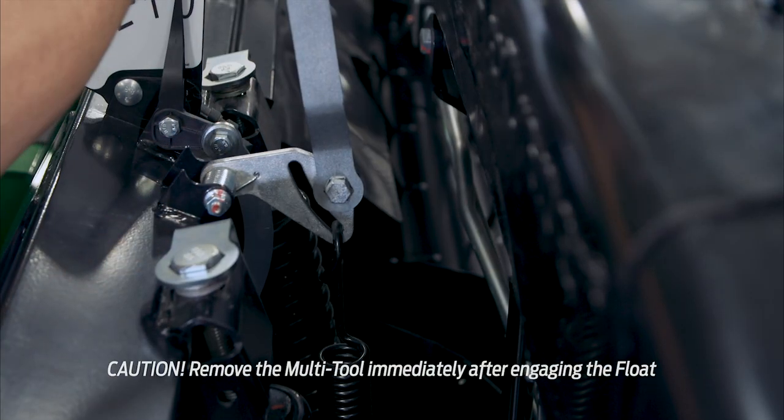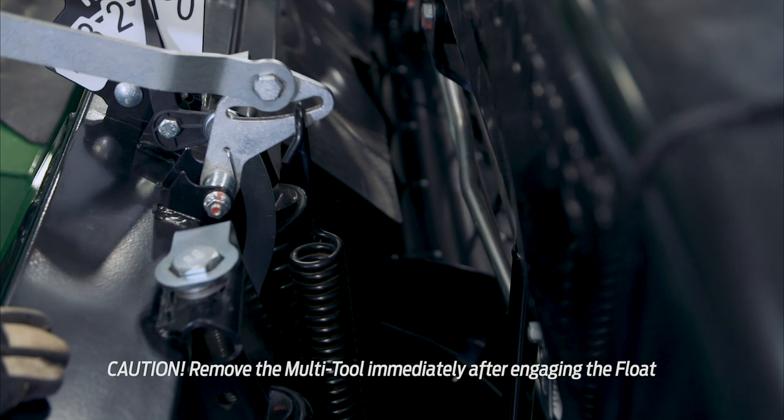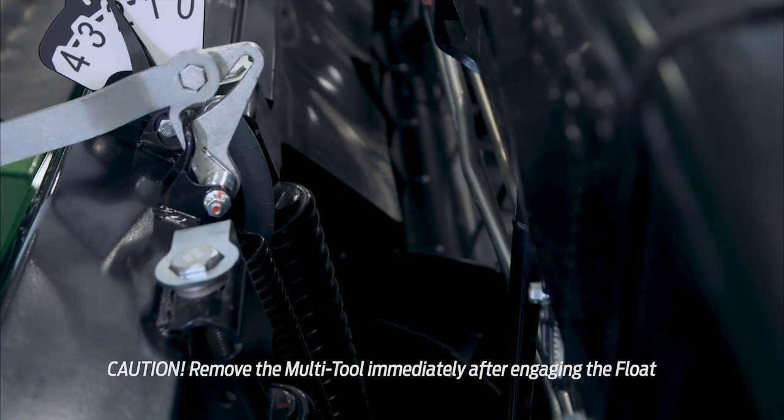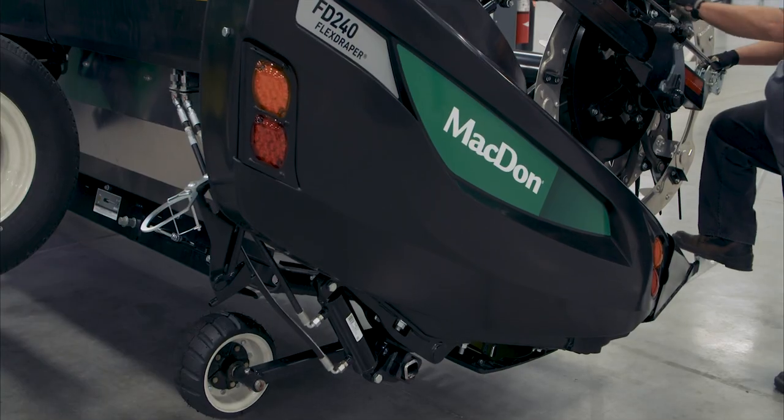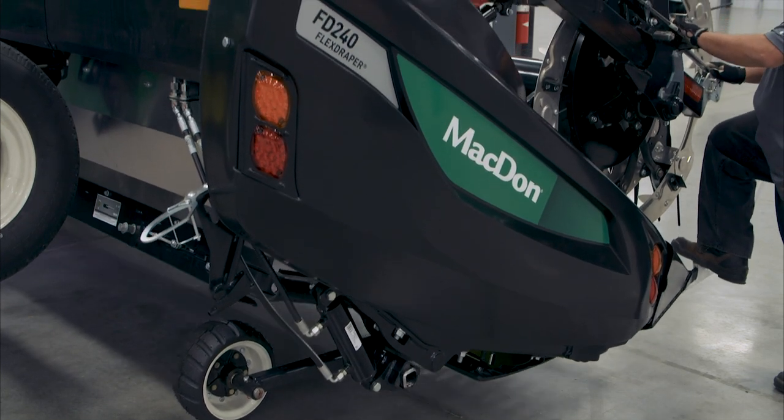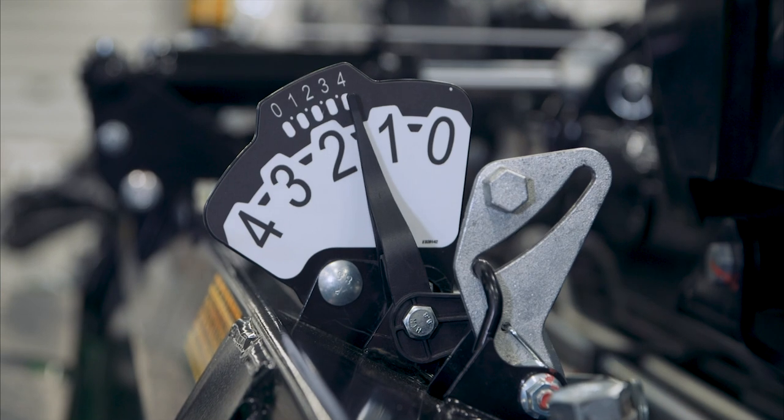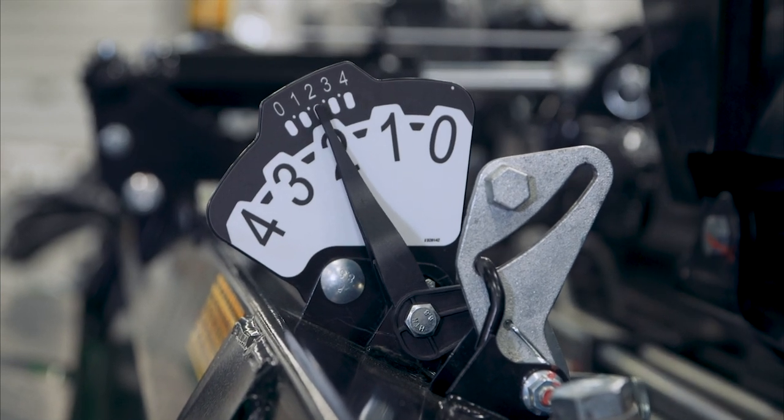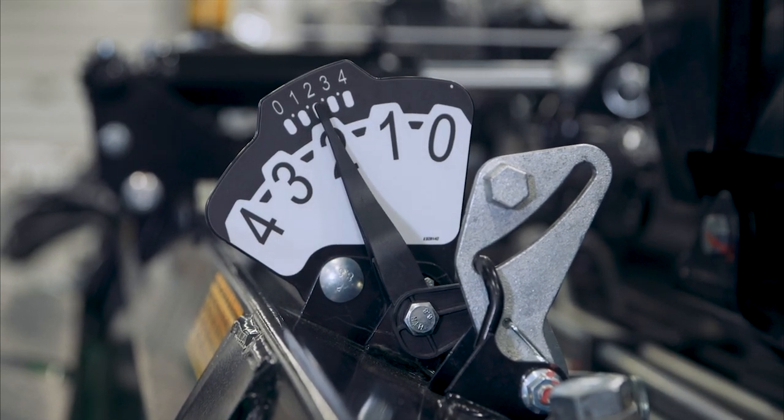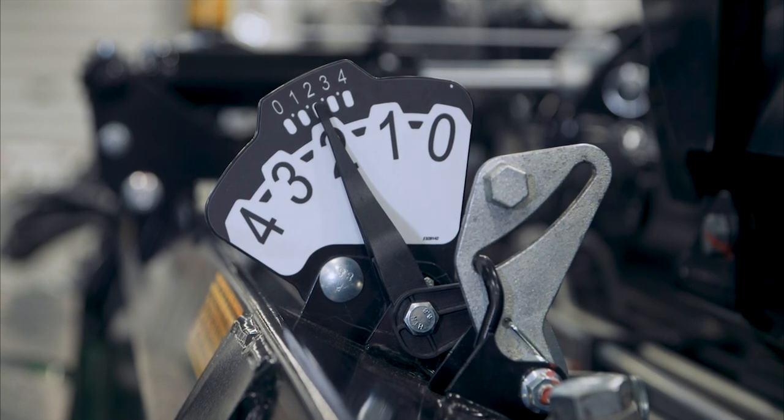It's important that the float setting levers on both sides are engaged while adjusting float. On the side that you are adjusting, move the header up and down by hand to reduce the effect of friction. Check the numbers in small print on the float setting indicator for the current float value. The pointer arm on the float setting indicator should be on number 2.